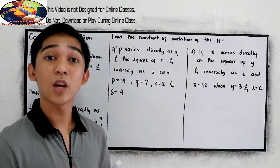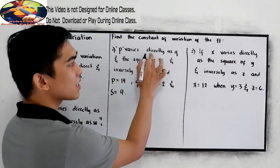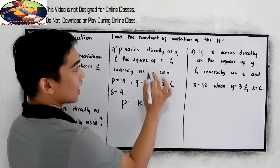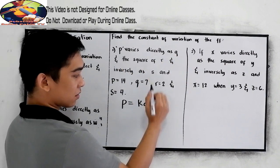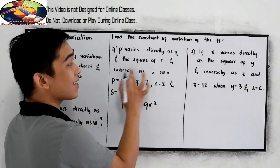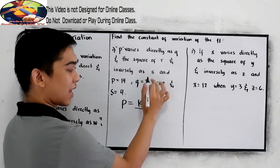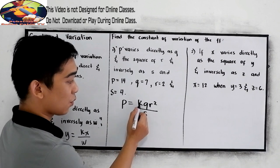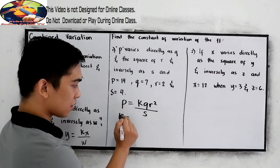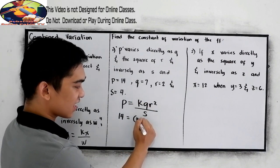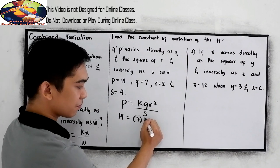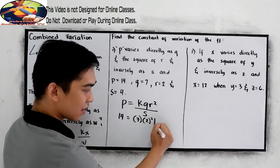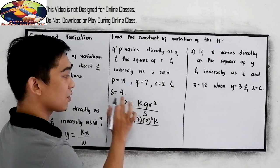So let us write first the equation of variation. p varies directly as q and the square of r, so r squared, and inversely as s. We have the following values. So we're going to find k: p is 14, substitute, q is 7, r is 2, then copy k over s is 4.